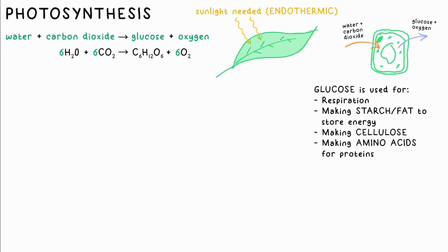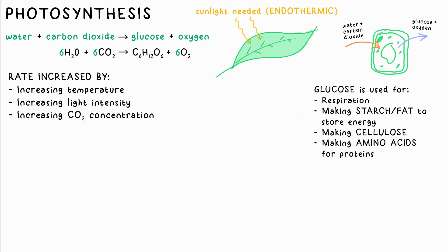Cellulose is used to produce cell walls, and amino acids are used for synthesizing proteins. The rate of photosynthesis is increased with higher temperature (unless it's so high that enzyme denaturation occurs), increasing light intensity, or increasing CO₂ concentration. Any one of these can be a limiting factor — for example, even if there's lots of CO₂ and it's warm, if there's not enough light, the rate will be limited by light.